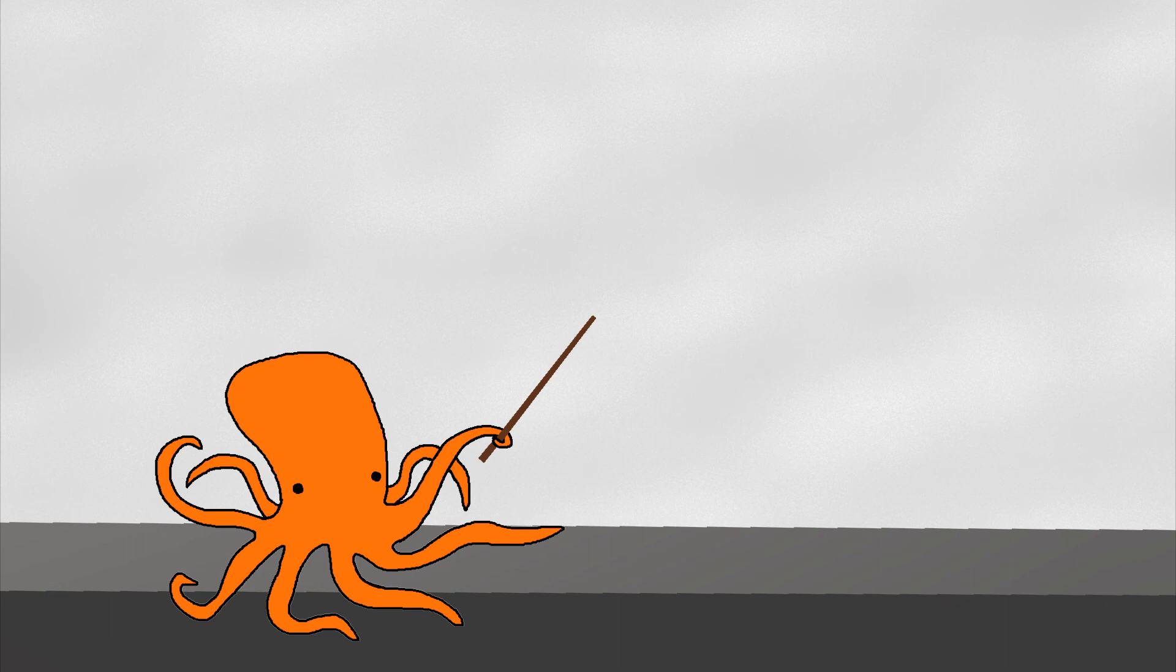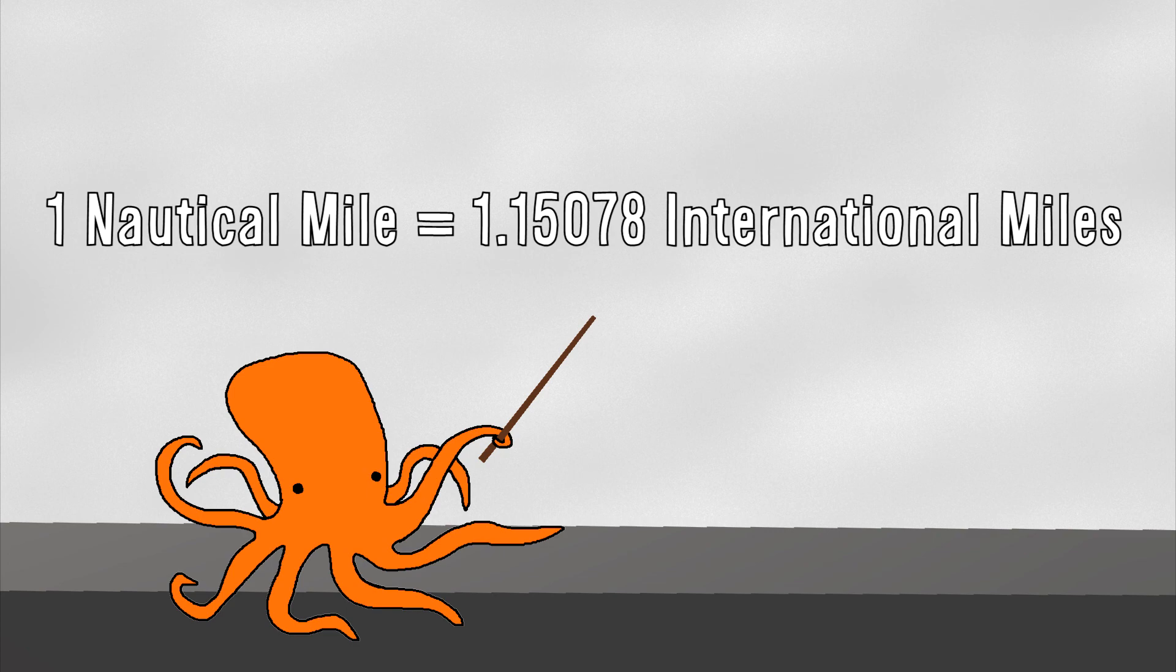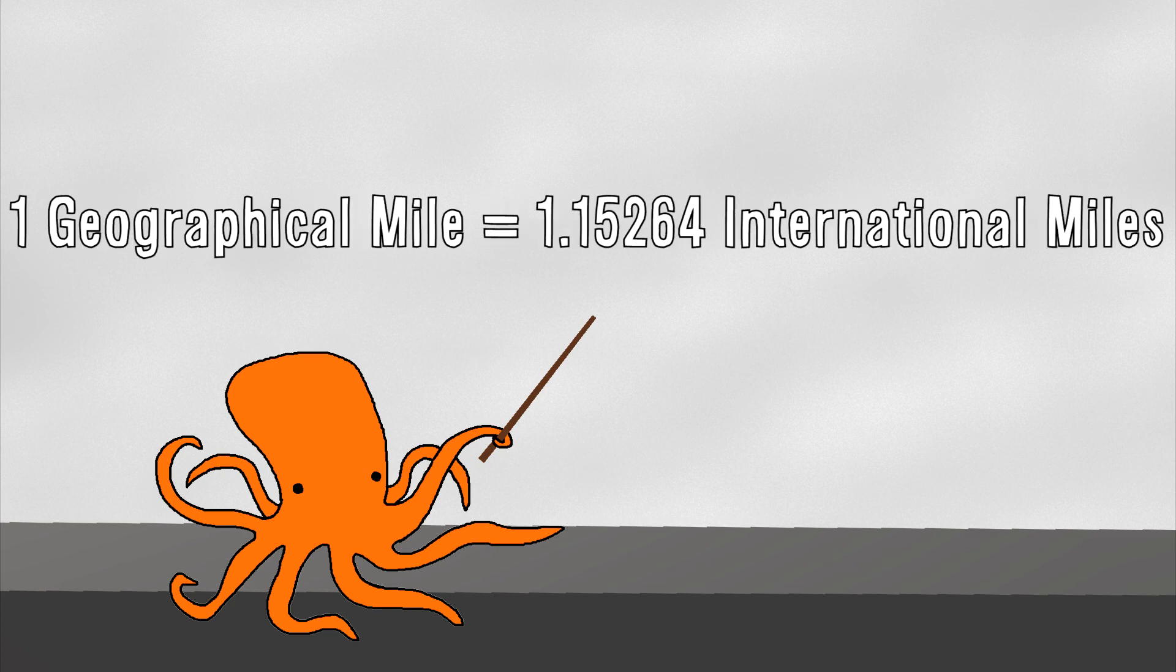So many miles. But how do they all compare? One nautical mile is 1.15078 international miles, and one geographical mile is 1.15264 international miles.